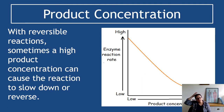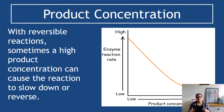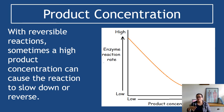High product concentrations can sometimes cause a reaction to slow down or reverse. In reversible steps, a high concentration of a particular product can cause reversal of a stage if the enzyme works in both directions. Additionally, high product concentrations can cause the reaction to slow down overall, because products keep bouncing into the active site instead of substrates, meaning some active sites are occupied and enzymes are overall less active.